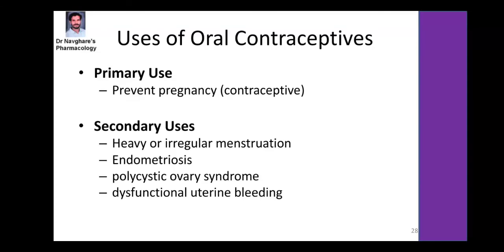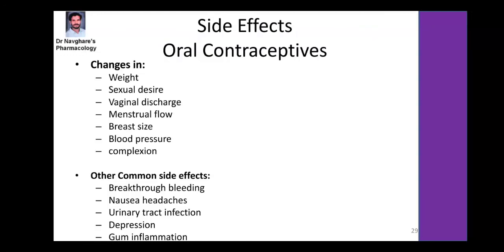Uses of oral contraceptives: primary use is prevention of pregnancy. Secondary uses include heavy or irregular menses, endometriosis, PCOD, and dysfunctional uterine bleeding. Side effects include change in body weight, changes in sexual desire (libido), vaginal discharge, alteration in menstrual flow, breast size change, blood pressure change, breakthrough bleeding, nausea, urinary tract infection, depression, and gum inflammation.